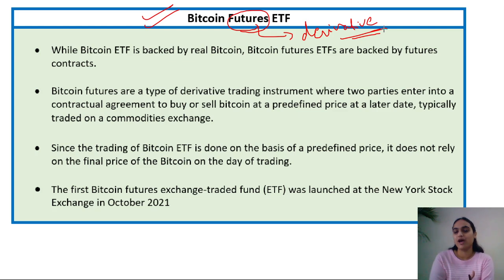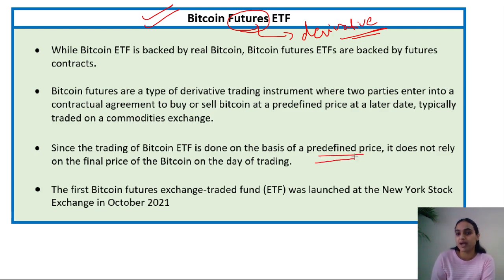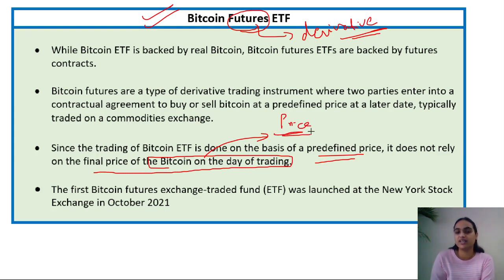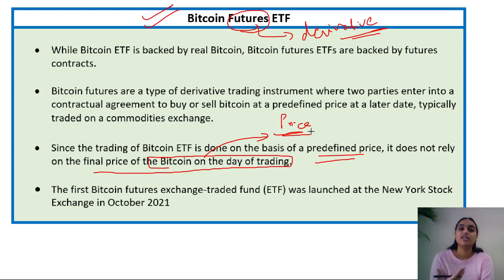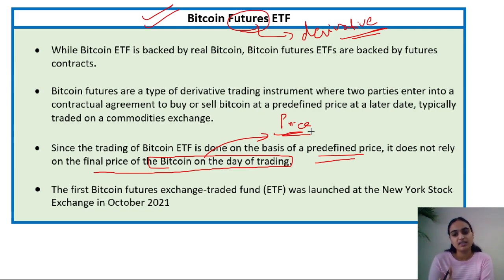Bitcoin futures are a derivative trading instrument where two parties agree to buy or sell Bitcoin at a pre-determined price at a later date. Bitcoin Futures ETFs are backed by these futures contracts. Since trading is done at a pre-defined price, there is no need to rely on the final price of Bitcoin on the trading date. The first Bitcoin Futures ETF was launched in the US in October 2021. Now a similar thing is going to happen for India, although SEBI has not yet approved crypto-related instruments on normal exchanges — this will be on the international exchange working under IFSC.